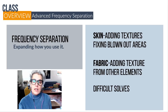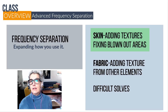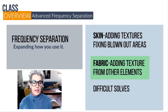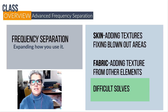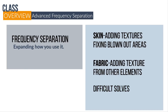We're going to be looking at frequency separation — how to expand its use by looking at skin texture: when the image is blown out and you need to add skin texture, or when someone's existing skin texture isn't very nice and you want to change it. We're also going to look at adding textures to fabric, and then a couple of difficult solves to see how you might implement frequency separation in your workflow.